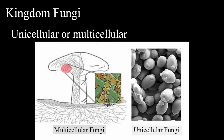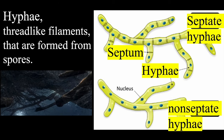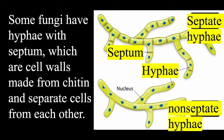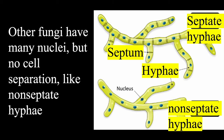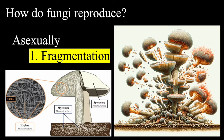Fungi can be unicellular or multicellular, and both types are eukaryotic. Hyphae are thread-like filaments that are formed from spores. Some fungi have hyphae with a septum — cell walls made from chitin that separate cells from each other. Other fungi have many nuclei but no cell separation, therefore no septum. Fungi can reproduce several ways, both asexually and sexually. An asexual method is known as fragmentation, which often starts with the fungal hyphae or mycelium. The hyphae break into smaller pieces, and each fragment then starts to grow independently, developing into a new mycelium.